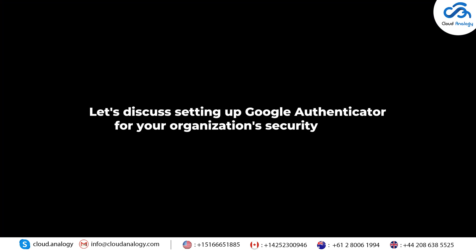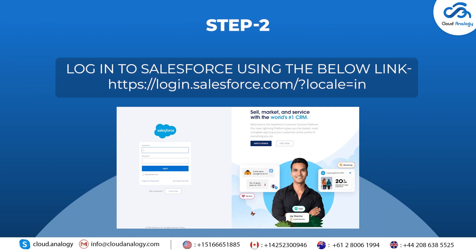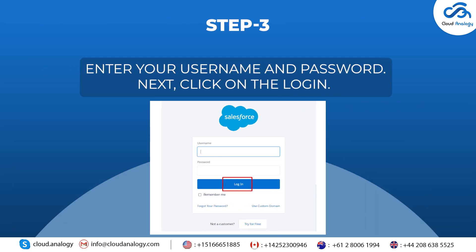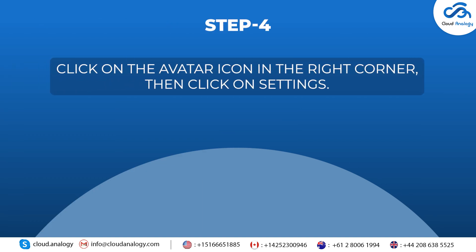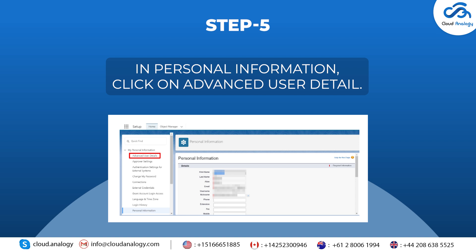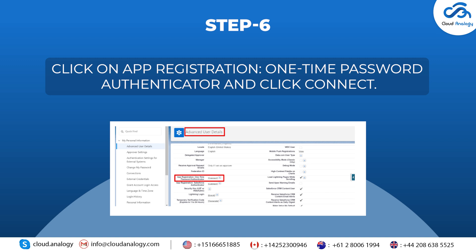Let's discuss setting up Google Authenticator for your organization's security needs. Step 1: Download Google Authenticator on your mobile. Step 2: Log in to Salesforce using the link provided. Step 3: Enter your username and password, then click on Login. Step 4: Click on the avatar icon in the right corner, then click on Settings. Step 5: In Personal Information, click on Advanced User Detail. Step 6: Click on App Registration, One-Time Password Authenticator, and click Connect.